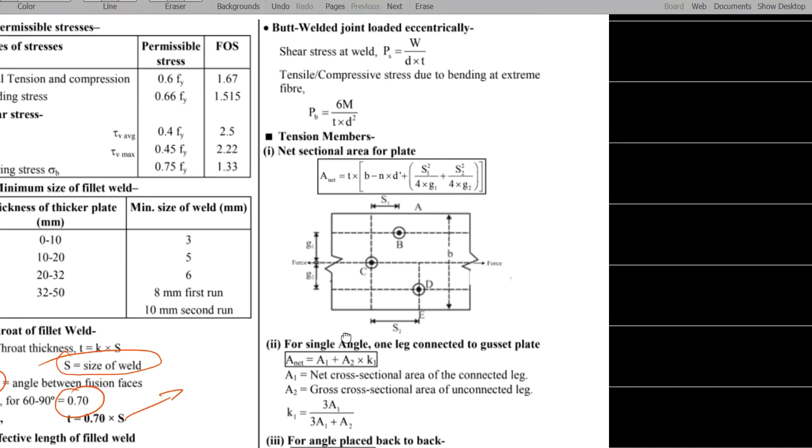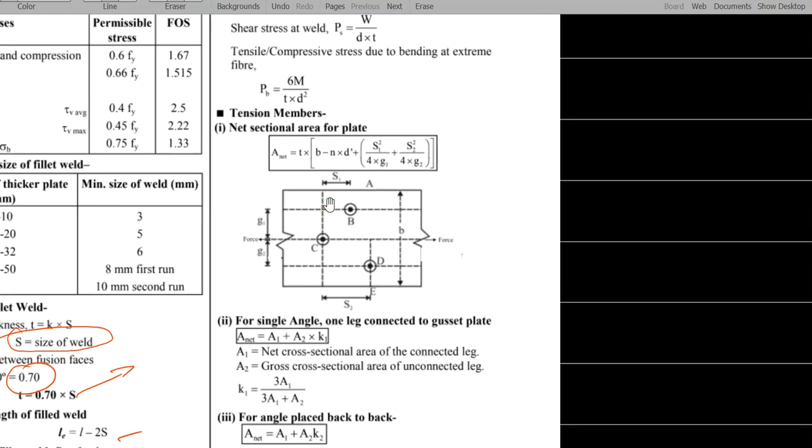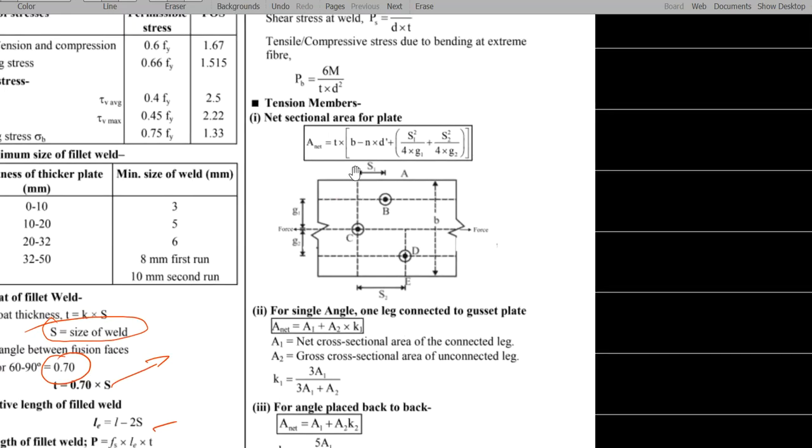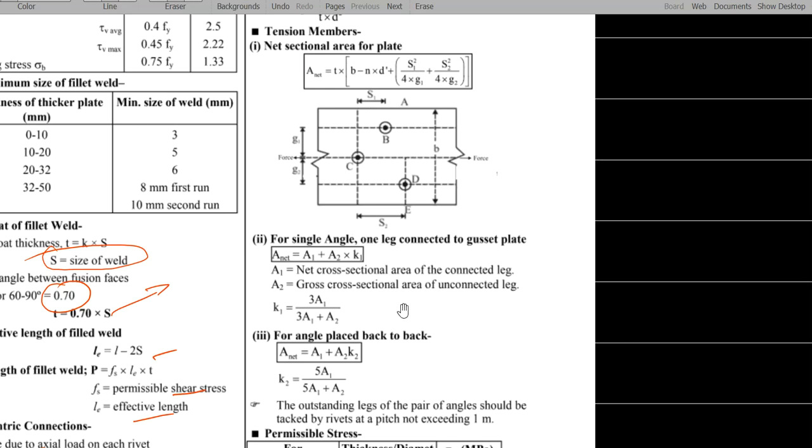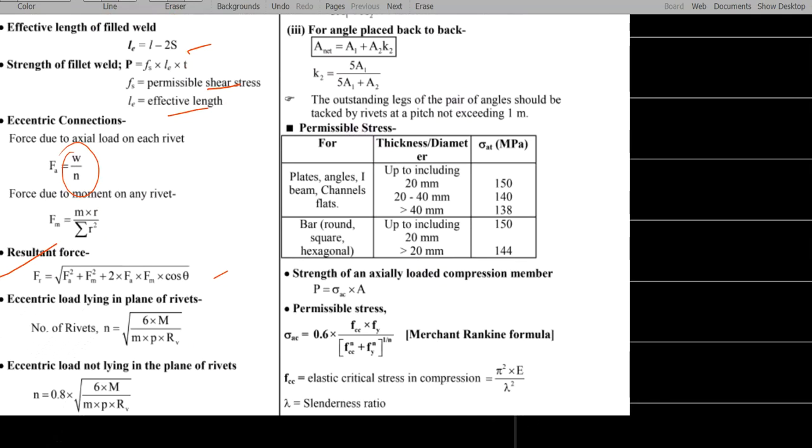Eccentric connection, load w by n moment, mass into r divided by root over r square resultant formula, f1 square plus fm square plus 2fa fm into cos theta. And we have next butt weld joint, which is w divided by dt and tensile compressive stress for this butt welded joint, 6 into moment divided by t d square. And tensile member gross area and net area is important. A net is nothing but thickness into B minus ND. S1 square 4 into Z. These are basically for this conversion of net sectional area from the cross area. Single angle, one leg connected to the gusset plate. A net is A1 plus A2 into K1. Angle placed back to back condition.